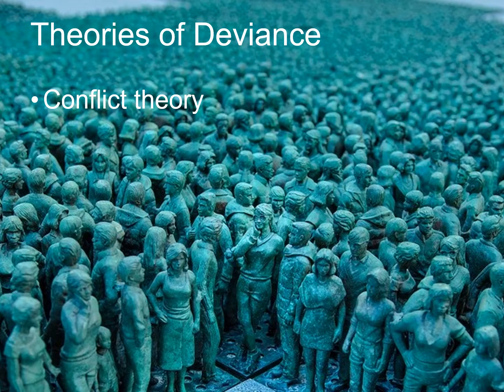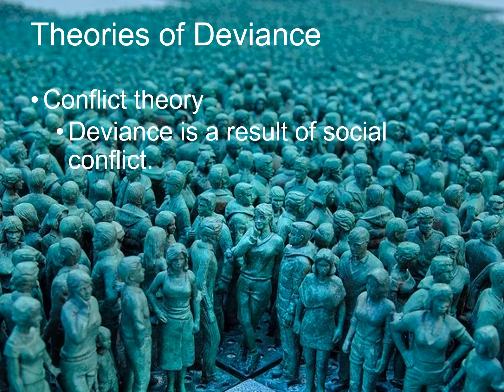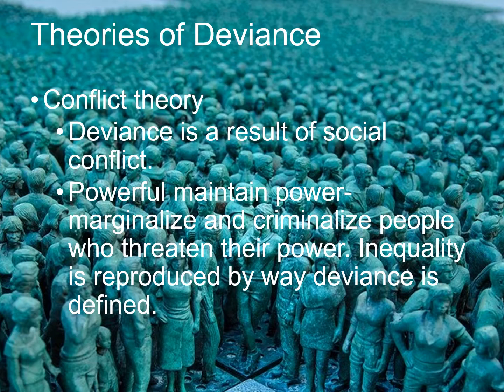Conflict theory looks at deviance in this way: that it's the result of social conflict, that the powerful maintain power by marginalizing and criminalizing people who threaten their power, and that inequality is produced by the way that deviance is defined. Vagrancy laws are in place because the people in power — those who are representatives of dominant culture — have deemed vagrancy to be deviant. Sociologist William Chambliss looked at how vagrancy laws have been applied differently over the years to the homeless, unemployed, racial minorities, or whoever seemed the most threatening at the time. He determined that vagrancy laws actually reproduce inequality in our society.